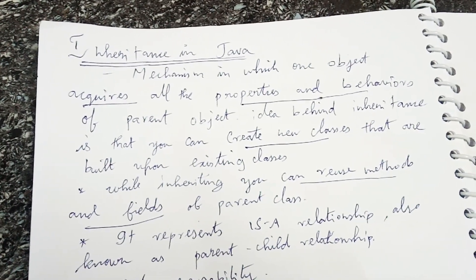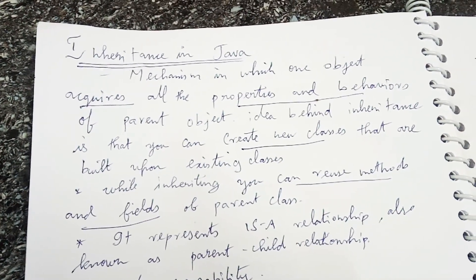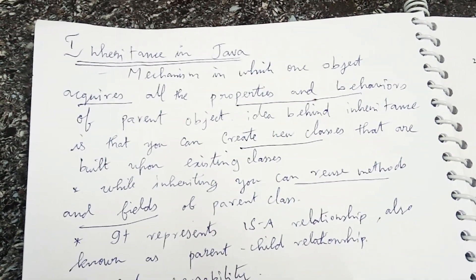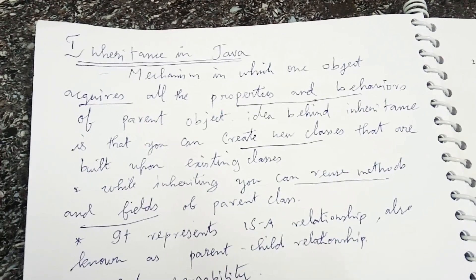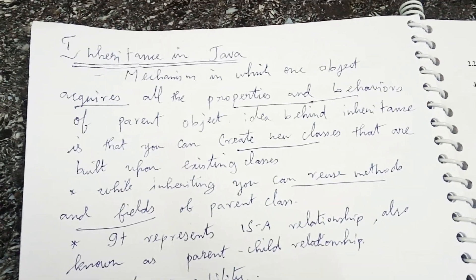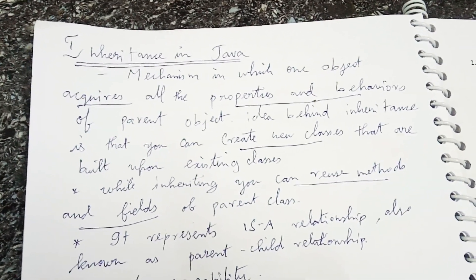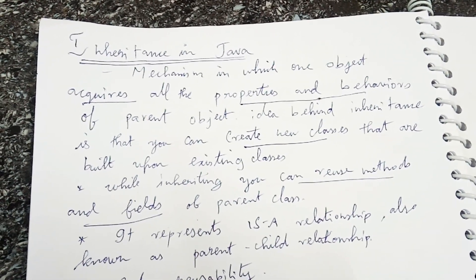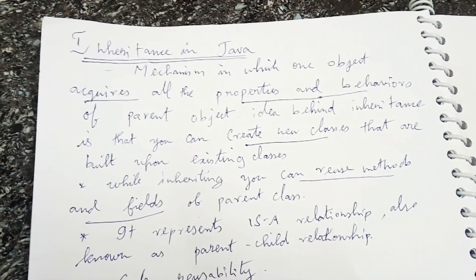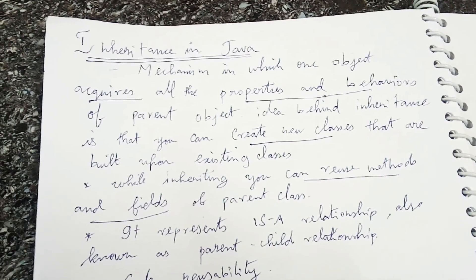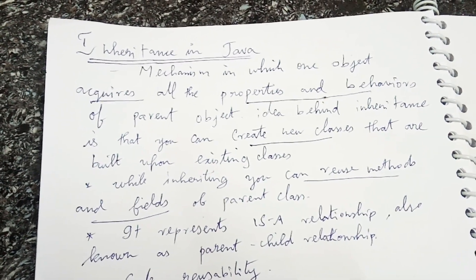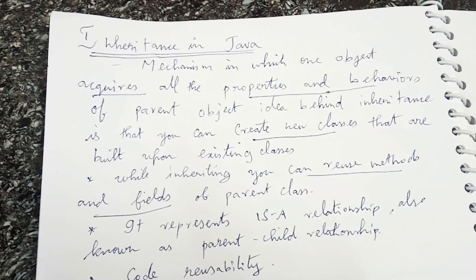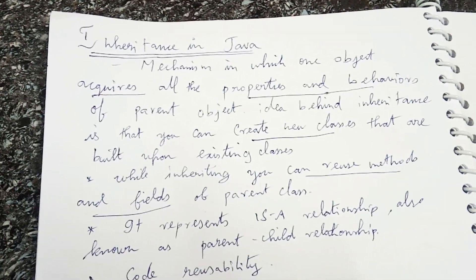Good morning. Today we are going to discuss the topic of inheritance in Java. In object-oriented features of Java we have many features like classes, objects, encapsulation, polymorphism, dynamic binding, and inheritance. Among those various features, inheritance is one of the most important features in Java, and it gives us the important purpose of code reusability.